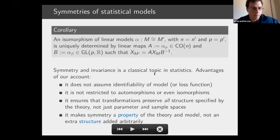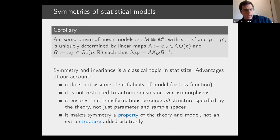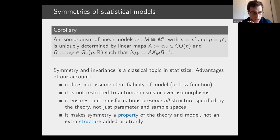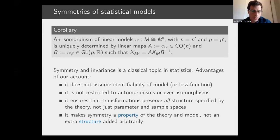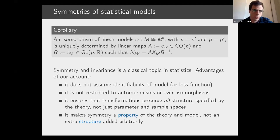It's worth noting that symmetry and invariance is a classic topic in statistics found in standard textbooks on decision theory. An advantage of our account is that it does not have as many assumptions, and more importantly, it is not restricted to automorphisms or even isomorphisms. We get a notion of homomorphism that generalizes some of the classic notions in a nice way.